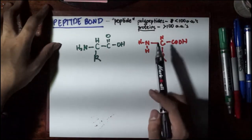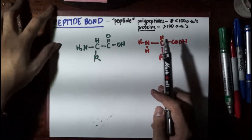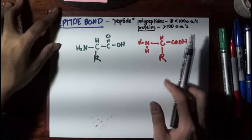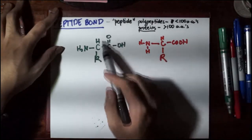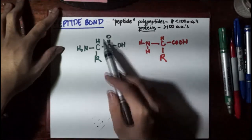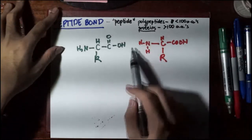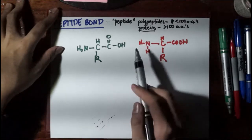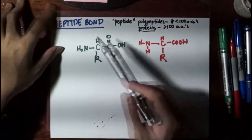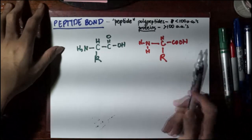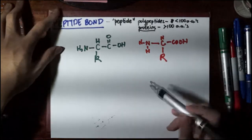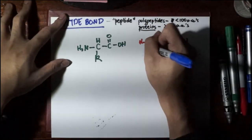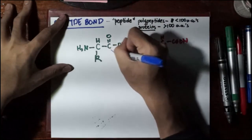I'll demonstrate using the simplest possible peptide, which is a dipeptide consisting of only two amino acids — amino acid one and amino acid two. I've expanded the structure of the carboxyl group on the first and the amino group on the second, because this makes it easier to demonstrate how the peptide bond is formed. It's a chemical reaction where the nitrogen would attempt to bond to the carbon in the carboxyl group.